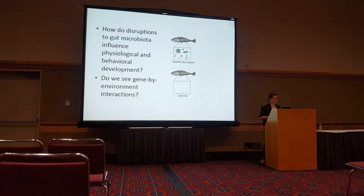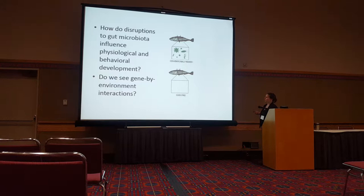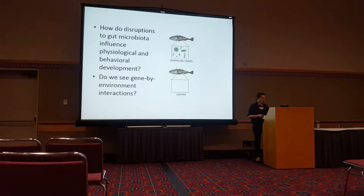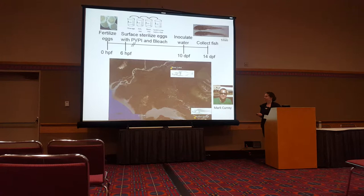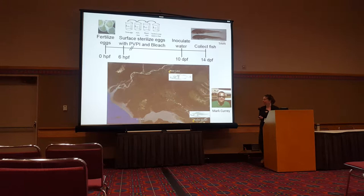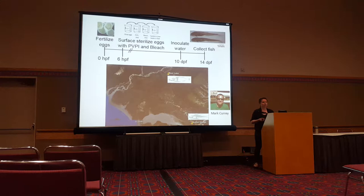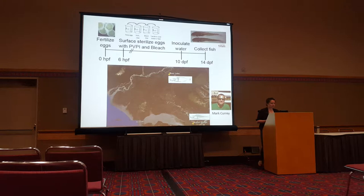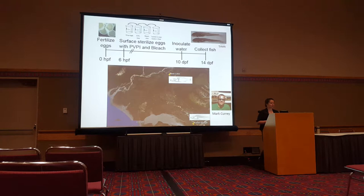The first experiment compares germ-free versus conventionally reared individuals — the extreme end of microbial disruption. The populations used are lab lines from the University of Oregon: crosses from Blue Lake, our freshwater population, and Rabbit Slough, our oceanic population, both from south-central Alaska. These populations are genetically and phenotypically distinct. To make fish germ-free, since they develop externally, we surface sterilize the eggs with iodine and bleach. We run these experiments for 14 days.